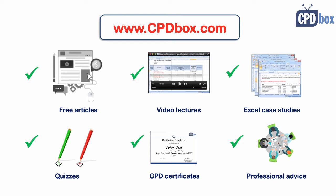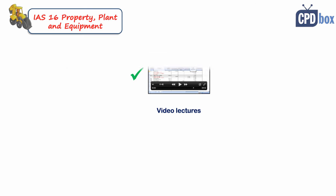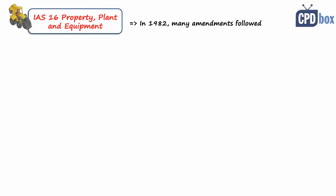we can help with advice. So IAS 16 Property, Plant and Equipment is quite an old standard, issued in 1982 for the first time with many later amendments and improvements. Its main objective is to prescribe the accounting for items of property, plant and equipment. I would say there are two main issues with PPE: number one,